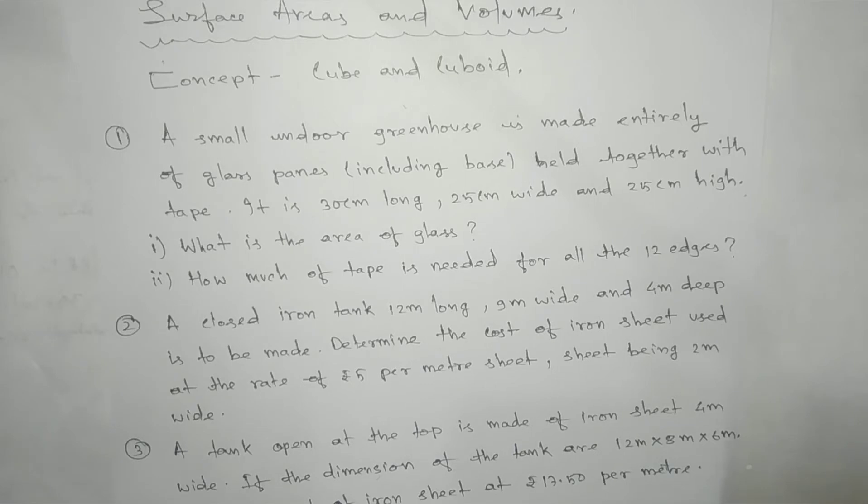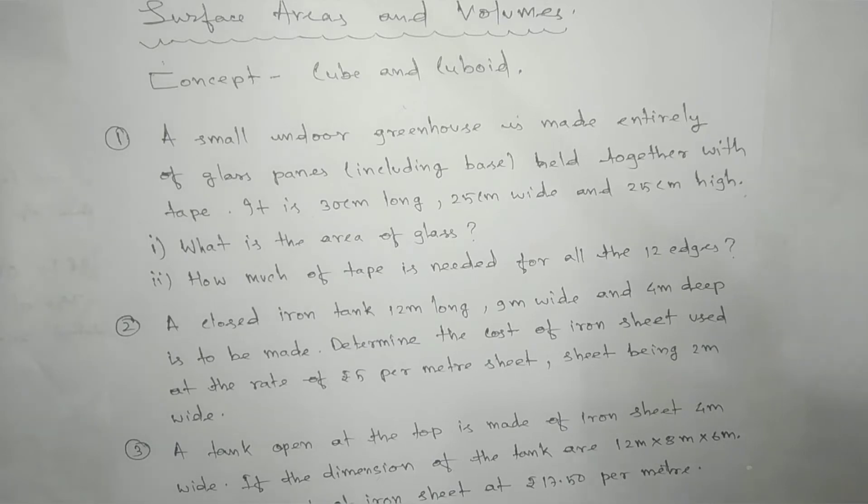Namaste students. Here we have a problem related to cube and cuboid. The first one: a small indoor greenhouse is made entirely of glass panes including base, held together with tape. It is 30 centimeter long, 25 centimeter wide, and 25 centimeter high.